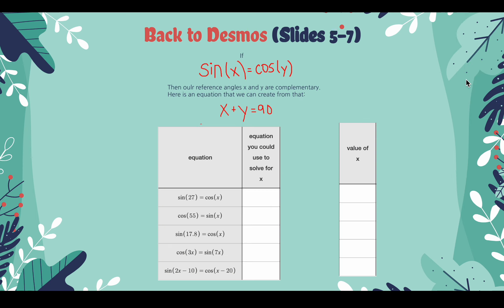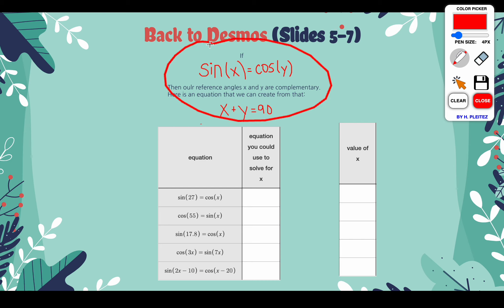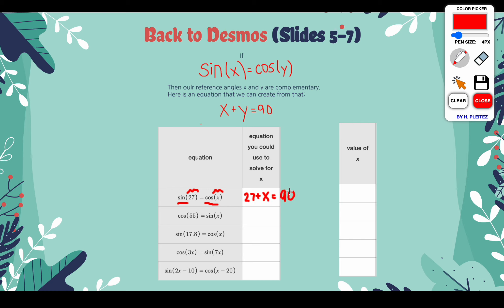Let's do some practice questions. Sine of 27 equals cosine of X. We want the equation to solve for X. Remember, sine of an angle equaling cosine of another angle is only true if the two angles are complementary — they must add to 90 degrees. So 27 plus X equals 90, and subtracting 27 from 90 gives you 63 degrees. Second one: cos of 55 equals sine of X. These two angles must add to 90 degrees, so 90 minus 55 gives us 35 degrees.